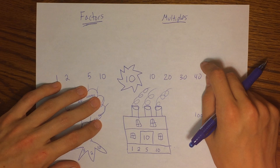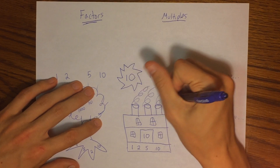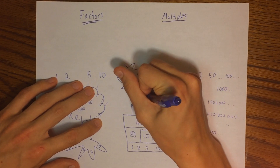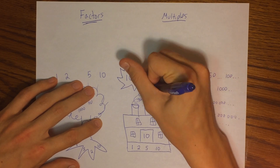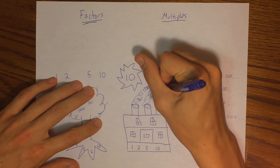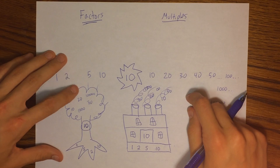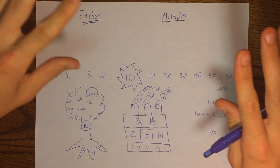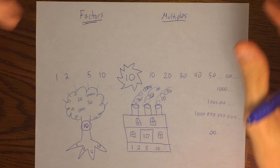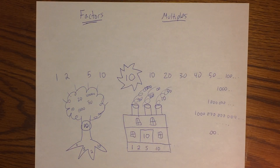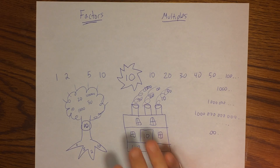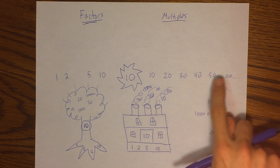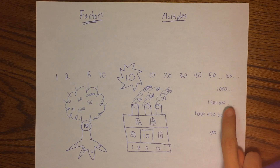The factory has multiple levels — get it, multiple levels! The multiples of 10 include 10, 20, 30, 50, a thousand, and so on. They're just going to keep going and going, just like the smoke from the factory keeps dissipating up and out forever and ever.